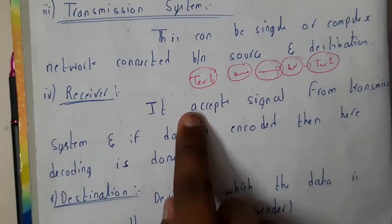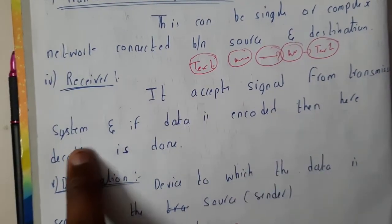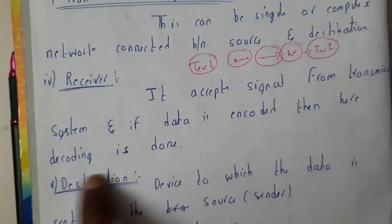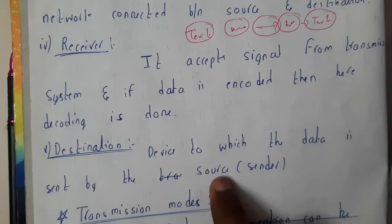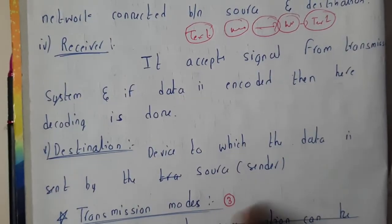The receiver accepts the signal from the transmitter system. If data is encoded, then decoding is done. Destination is where you reach the final destination with the particular text that you want.